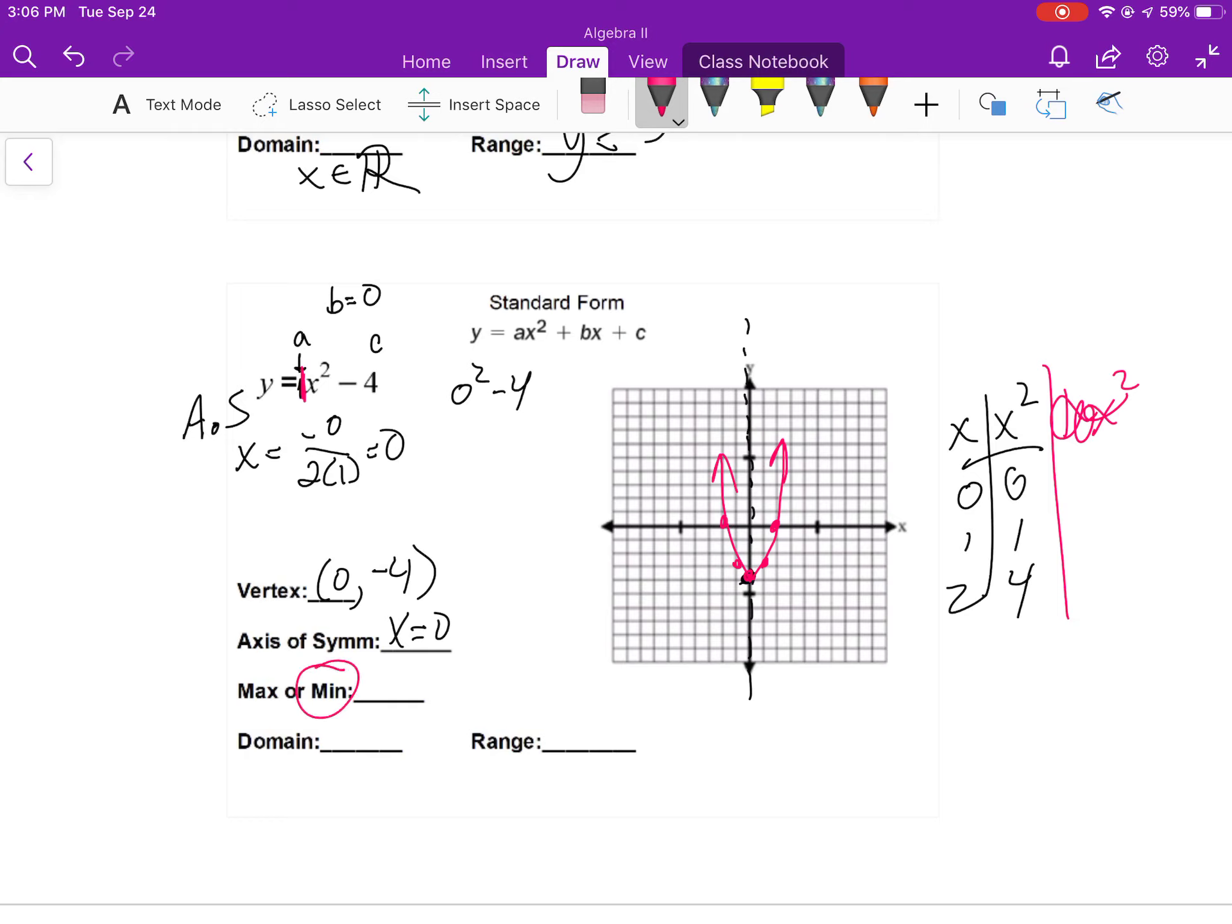I've got a minimum of y is equal to negative 4. My range is y is greater than or equal to negative 4. And my domain is x is all real numbers.